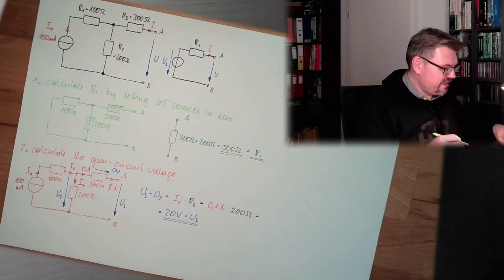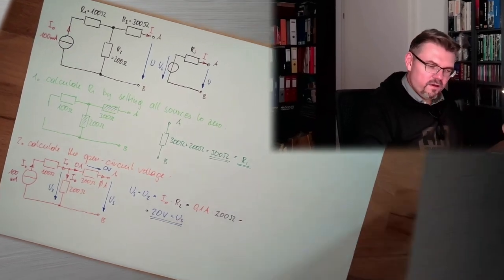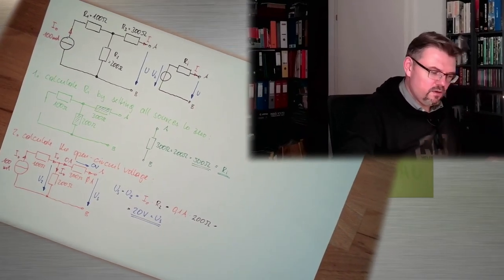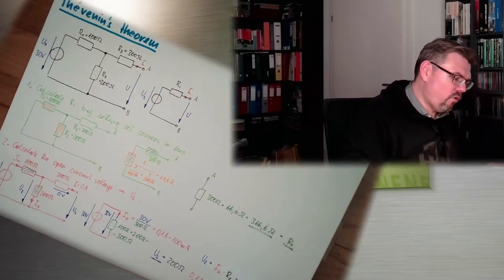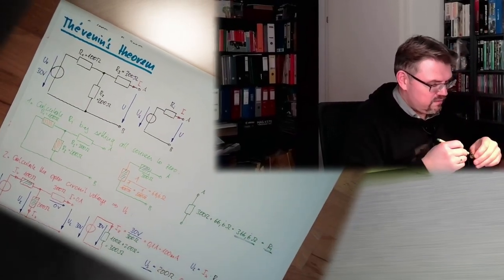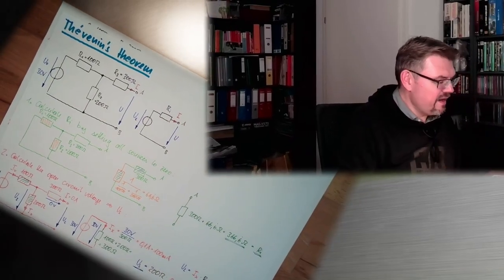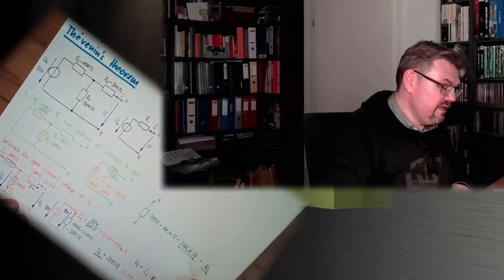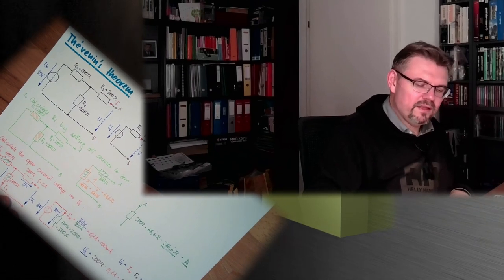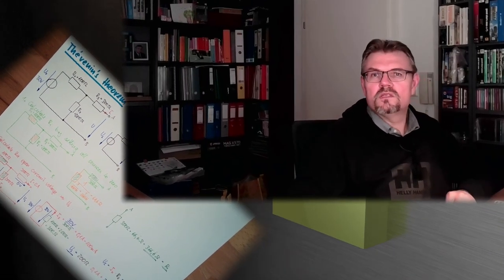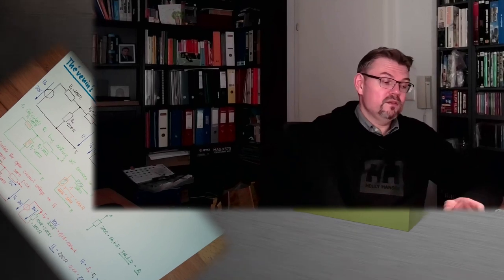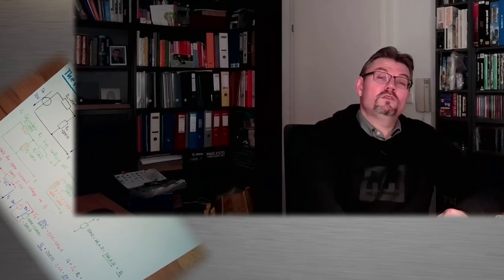That's the Thévenin theorem. We can replace all possible linear networks with just one voltage source. For instance, we will get to know the Wheatstone bridge — you can replace a Wheatstone bridge by a voltage source.